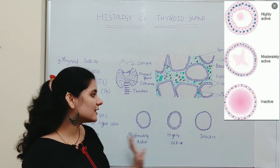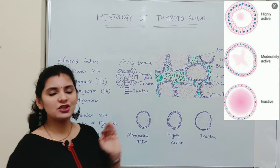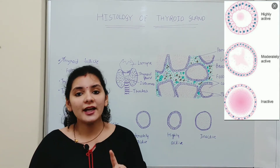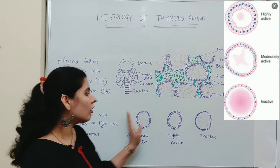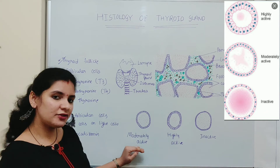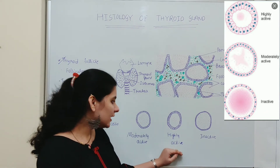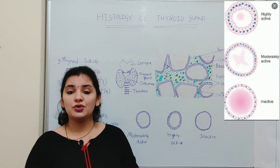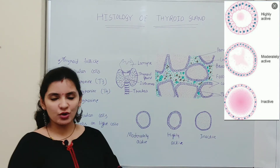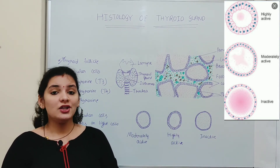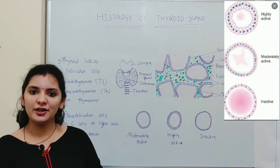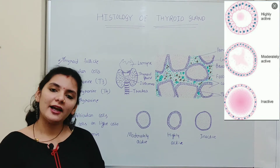So the shape of the follicular cells depends on the activity of the thyroid follicle. An individual thyroid gland can have all three types of thyroid follicle — moderately active, highly active, and inactive. That is about the thyroid follicle, which is the structural unit of the thyroid gland.